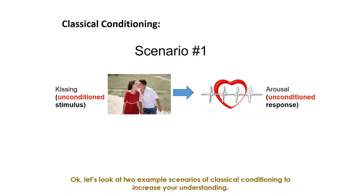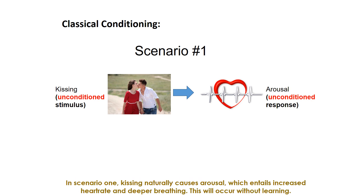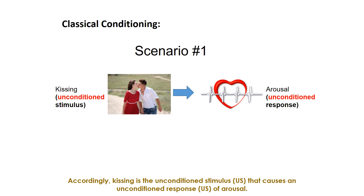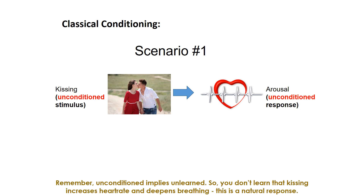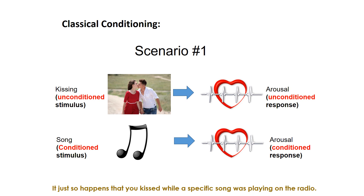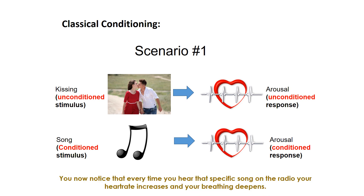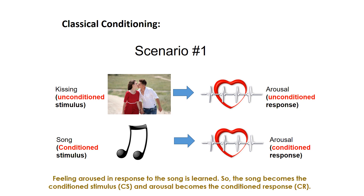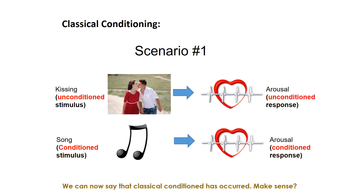In scenario one, kissing naturally causes arousal, which entails increased heart rate and deeper breathing. This occurs without learning. Accordingly, kissing is the unconditioned stimulus that causes an unconditioned response of arousal — unconditioned implies unlearned. It just so happens that you kissed while a specific song was playing on the radio. Now, every time you hear that song, your heart rate increases and your breathing deepens. Feeling aroused in response to the song is learned, so the song becomes the conditioned stimulus and arousal becomes the conditioned response. We can now say that classical conditioning has occurred.